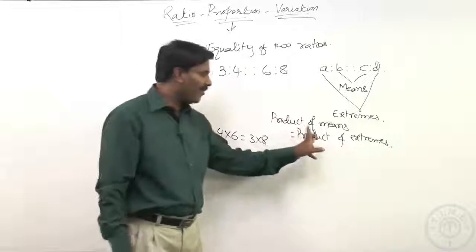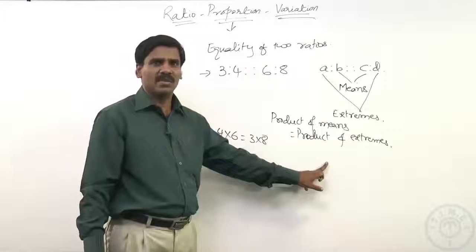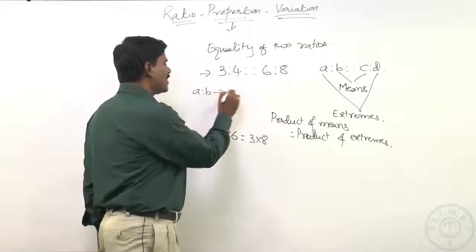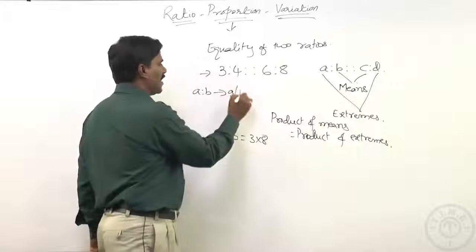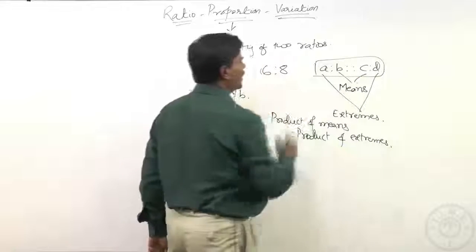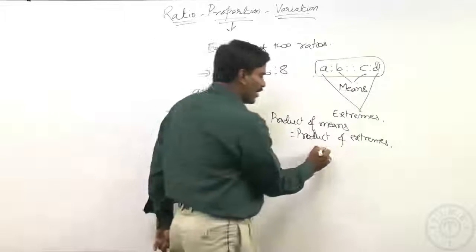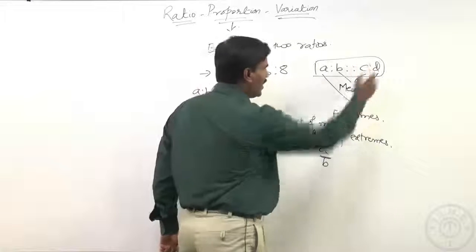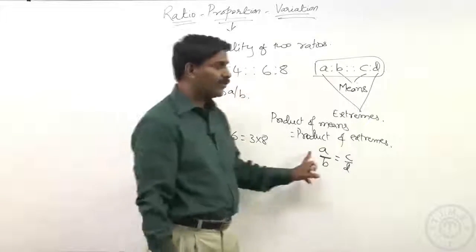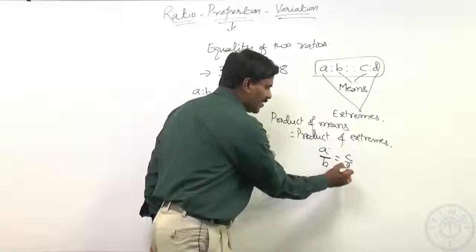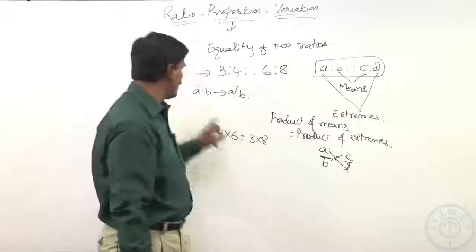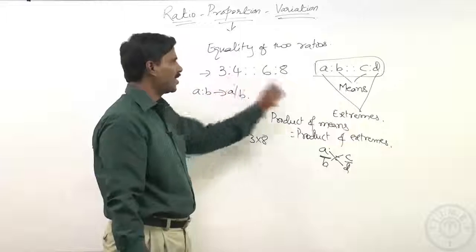How the product of means equals product of extremes — we need to go back to our ratio definition. A ratio like a is to b can be represented as a fraction a by b. Looking at the case a is to b in proportion with c is to d, we have a by b as the first ratio and c by d as the second. Since equality of two ratios is called proportion, if a is to b is same as c is to d, by cross multiplication we get a times d equals b times c.